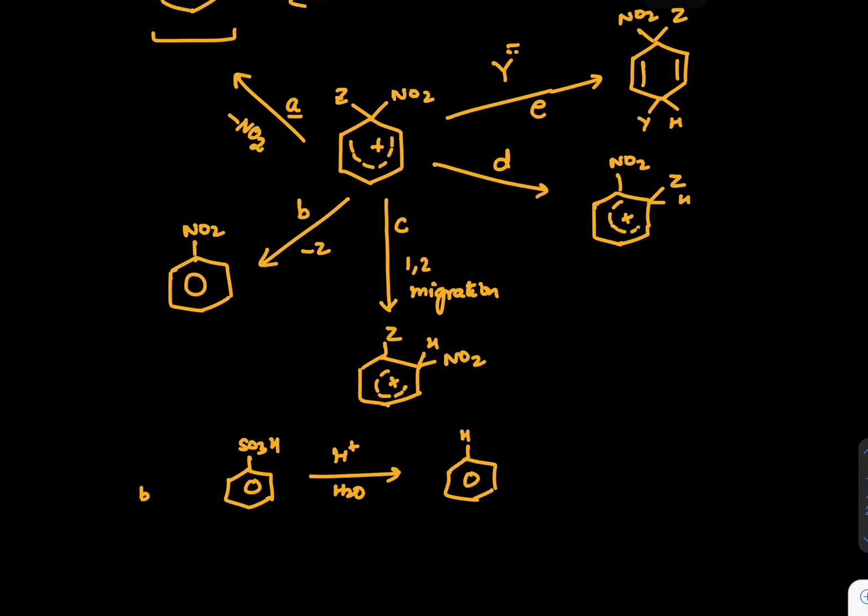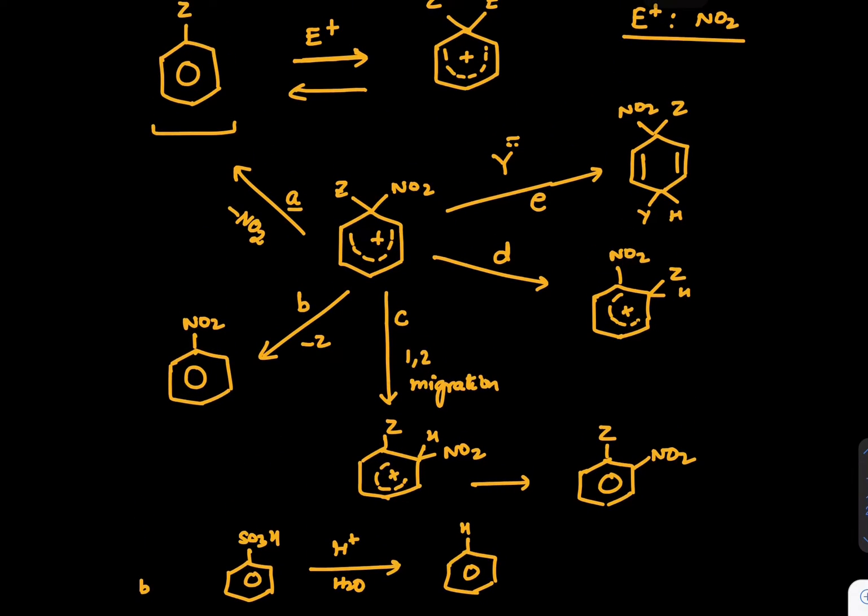It can be 1,2 migration, which will end up giving us this kind of product. Finally, Z and NO2. It can be option number D, which can end up giving you NO2 and Z. Now when you compare NO2 and Z and Z and NO2, it is really difficult that differentiation between these two. But we said D is very, very minor. D is very, very less possible, like possible even.